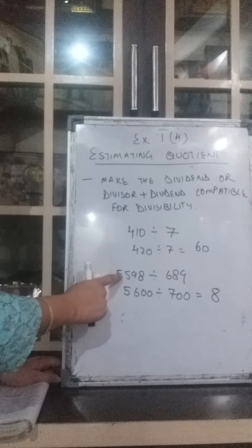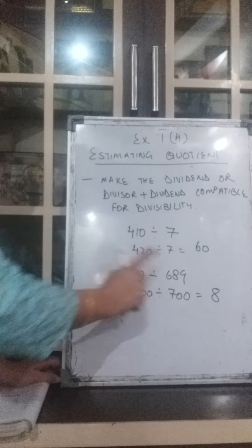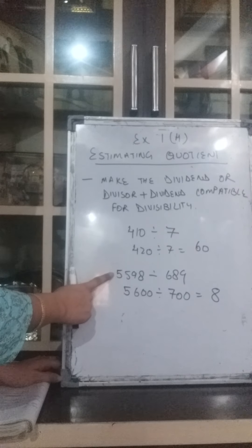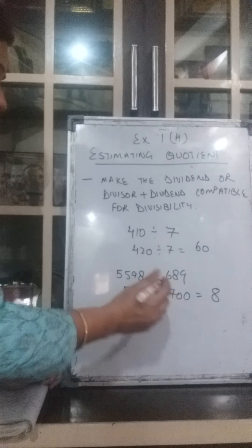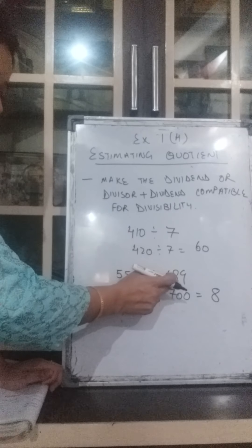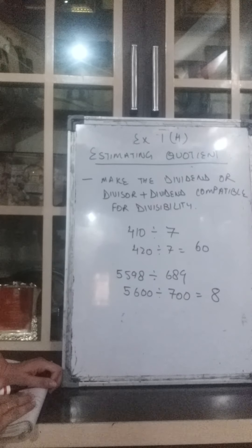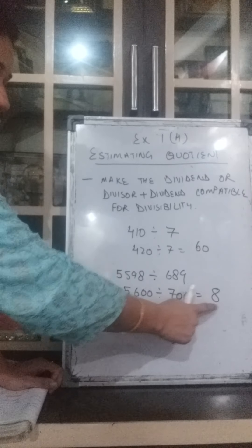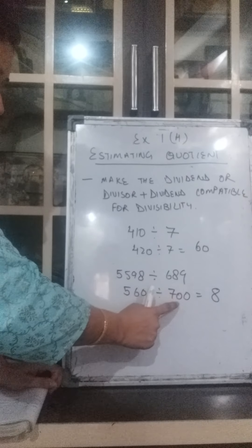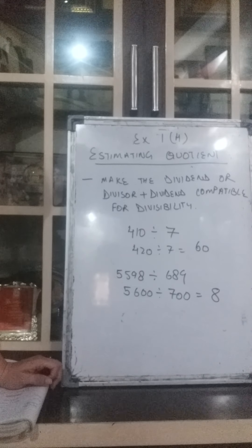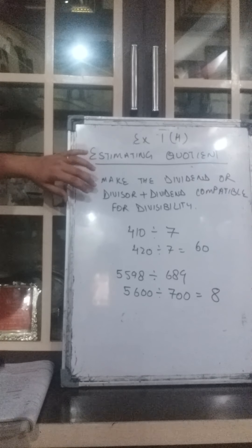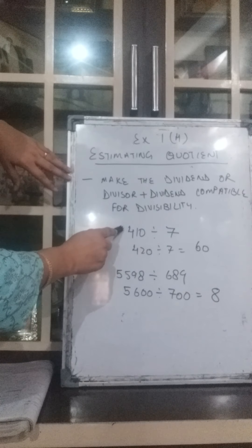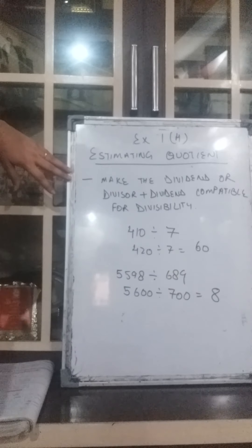Now the second example: 5598 divided by 689. Here, what is the number closer to 5598 which can be divided by 689? We will also change to a number closer to 689 so that both numbers can be easily divided. So we have changed it to 5600 divided by 700, which gives you 8. We have to convert the divisor and the dividend — sometimes only the dividend — into a number which is closer and which can be easily divided by the divisor.